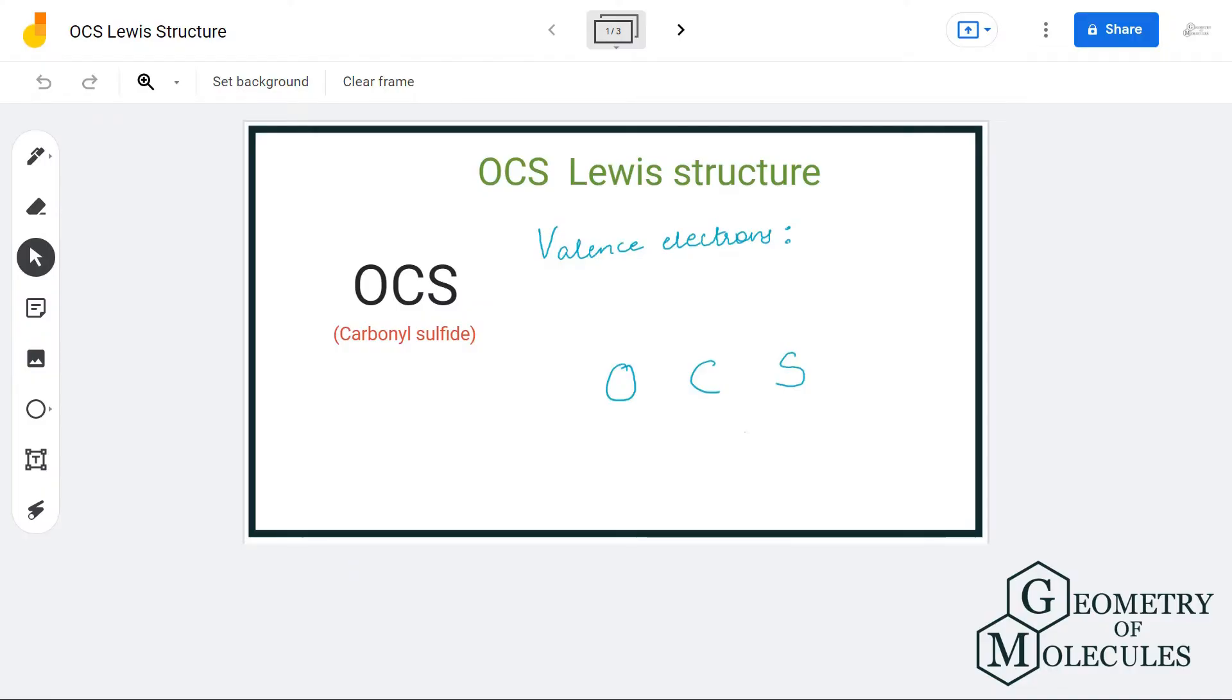Hi guys, welcome back to our channel. In today's video we are going to help you with OCS Lewis structure. It is a chemical formula for carbonyl sulfide, and to determine its Lewis structure we will first look at the total number of valence electrons.